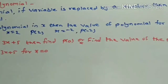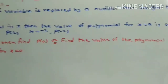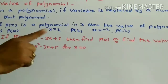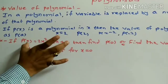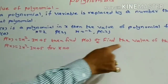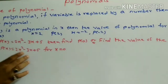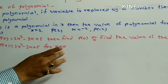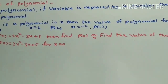For example, if p(x) is equal to 2x squared minus 3x plus 5, then find p(0). This question is also written as: find the value of the polynomial p(x) = 2x squared minus 3x plus 5 for x equal to 0. Both questions are the same.